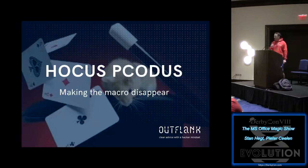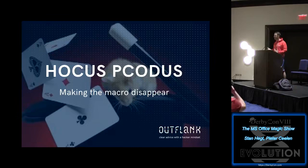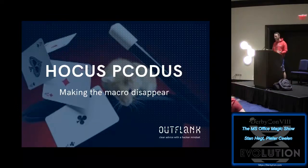I'm going to do the first illusion. Every magician should have an illusion in his playbook where he makes things disappear. So let's start there. Let's make a macro — let's make our evil code disappear. It's a basic trick.